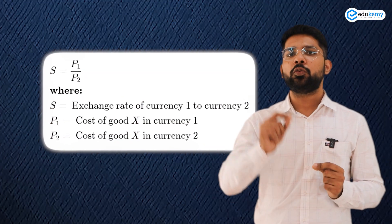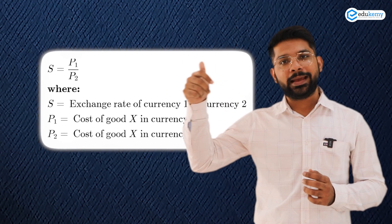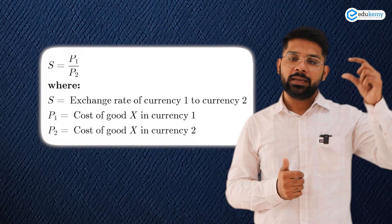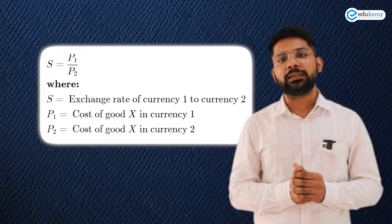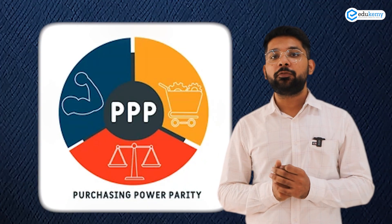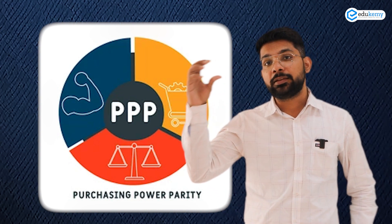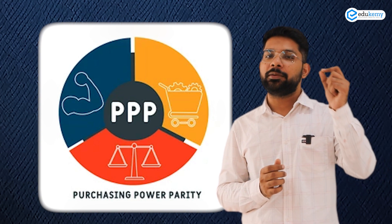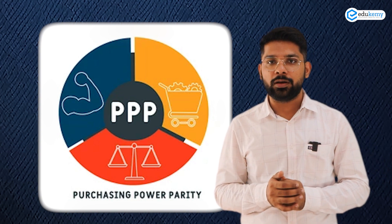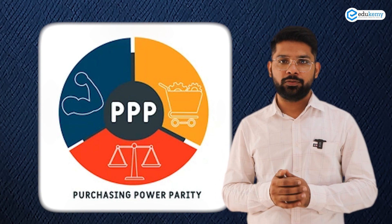To calculate purchasing power parity, we use the formula: S = P1 / P2, where P1 is the price in the first country, P2 is the price in the second country, and S is the exchange rate comparison between the two currencies. This concept is useful in both your prelims and mains examinations and will help you eliminate incorrect statements in questions. Thank you everyone.